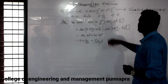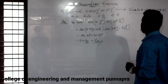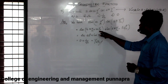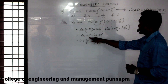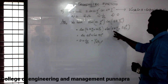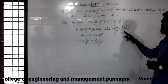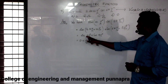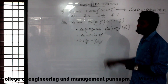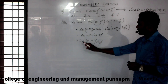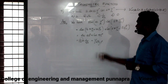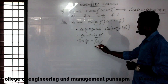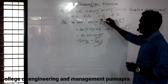Cos(A plus B) plus cos(A minus B) — that is cos 90 plus cos 45. Cos 90 is 0 and cos 45 is 1 by root 2, so the answer is 1 by root 2. Thank you so much for joining us and we'll see you in the next video. See you next time.